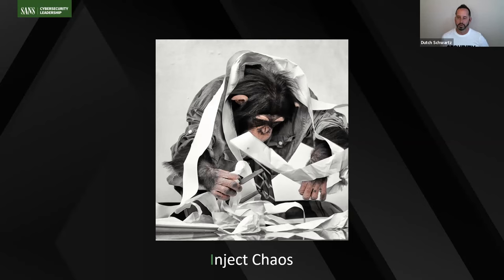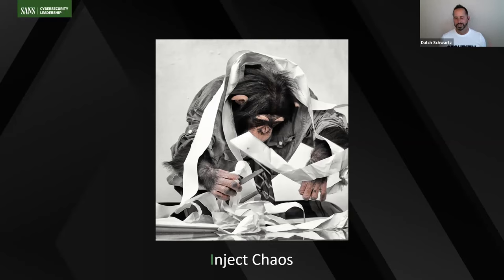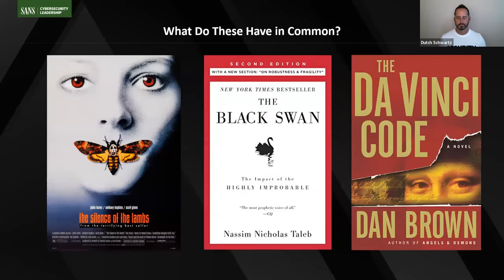I would encourage you to do that. If you run a tabletop exercise and it goes pretty well — say 70-80% of your objectives are achieved — think about injecting some chaos as you go through that process, because that's much more realistic in terms of what really happens. So: pre-mortem, tabletop exercise, inject chaos. Those are three tips and techniques you can use.